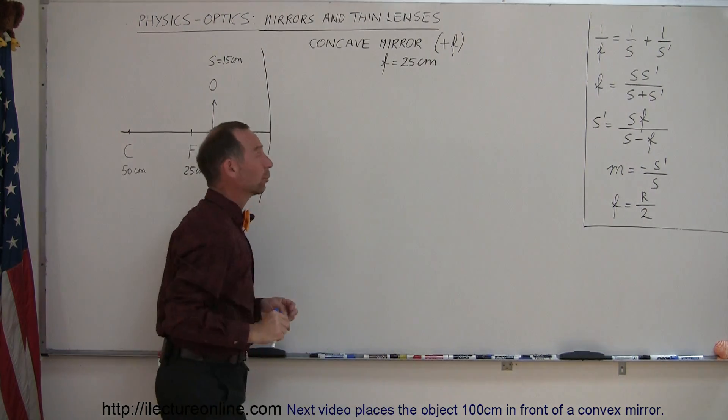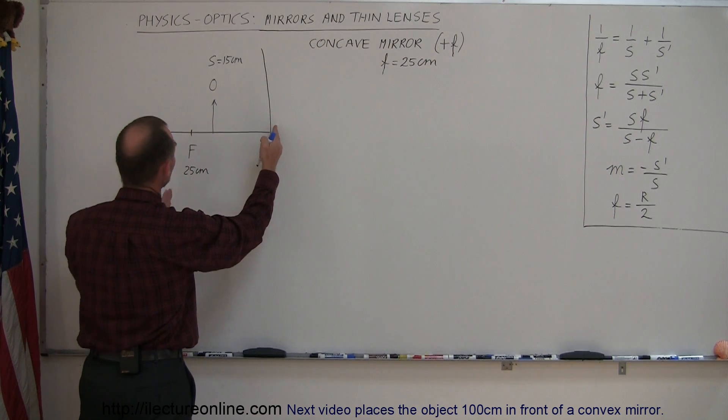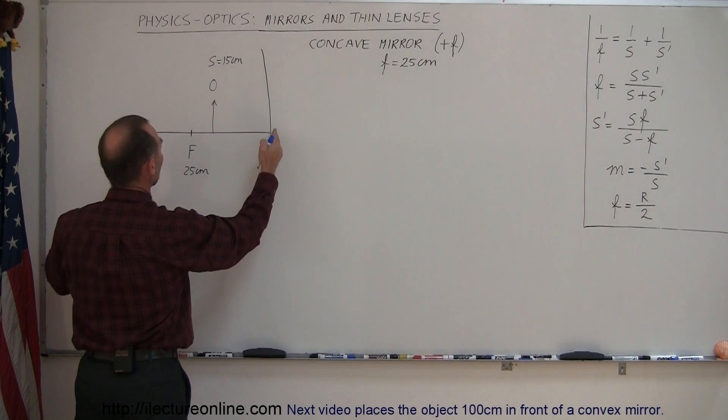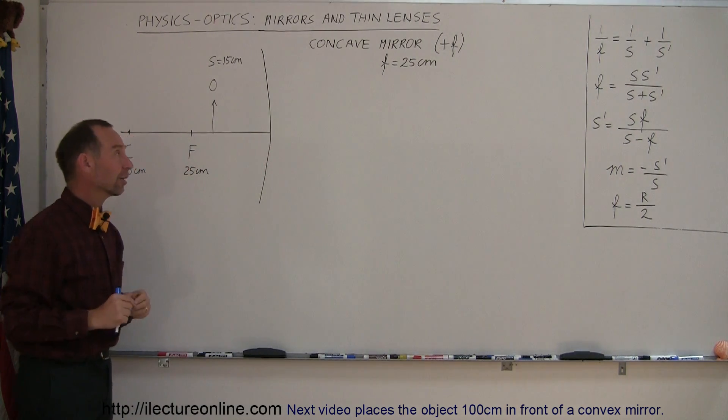In this case, the one we have as an example here has a focal length of 25 centimeters, meaning the distance from the mirror to the focal point is 25 centimeters, which means the distance from the mirror to the center of curvature is 50 centimeters.